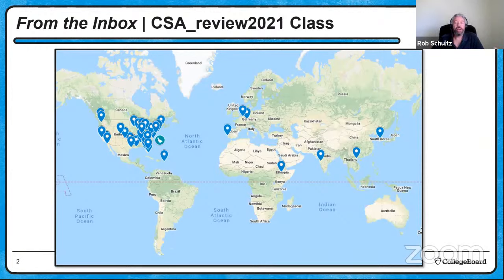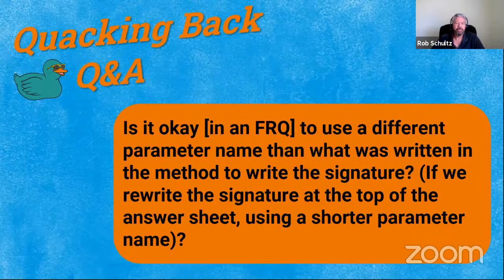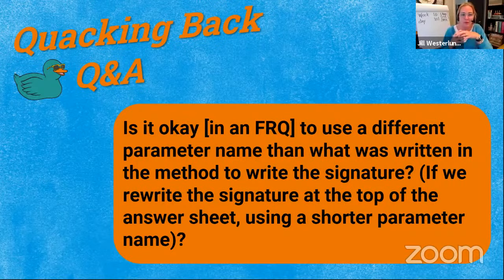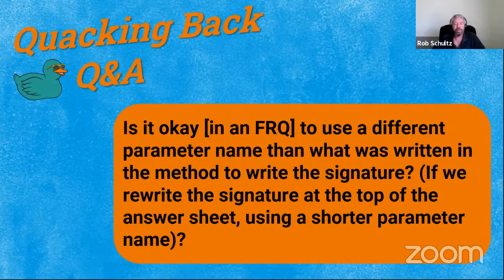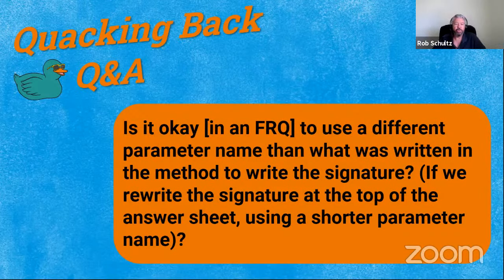We are here again to help you prep. First, we wanted to look into our quackback bag at some questions we've received. The first one: is it okay to use a different parameter name than what was written in the method signature, if we rewrite the signature at the top of the answer sheet using a shorter parameter name? I'm going to qualify this — it kind of depends on the free response question.